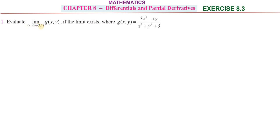Evaluate the limit as x, y tends to 1, 2 of g(x,y) if the limit exists, where g(x,y) equals (3x² - xy)/(x² + y² + 3).